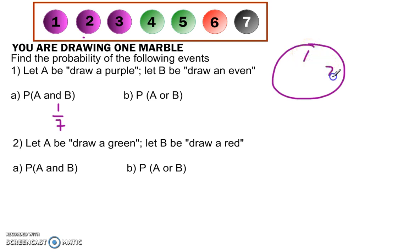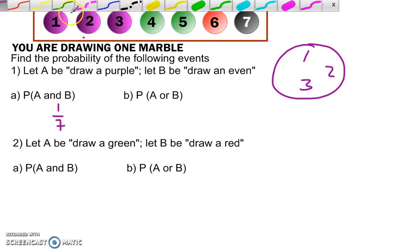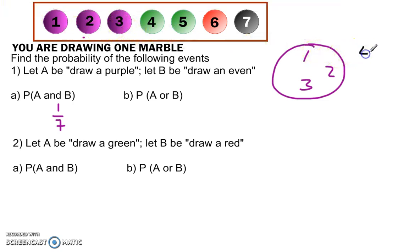Now we could show this by saying, okay, we have purple numbers. We have one, two, and three, and then even numbers. There is two, and then we also have four and six, and they are not purple, but they are even, and two is in both of these. Okay, so only one of all of these are purple and even.